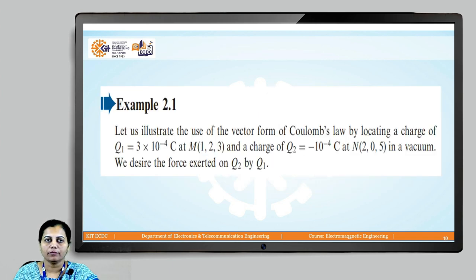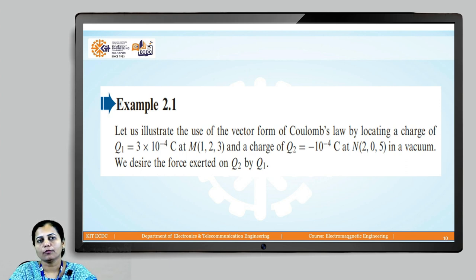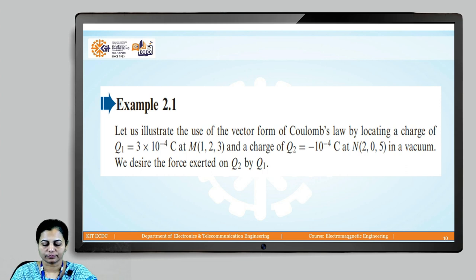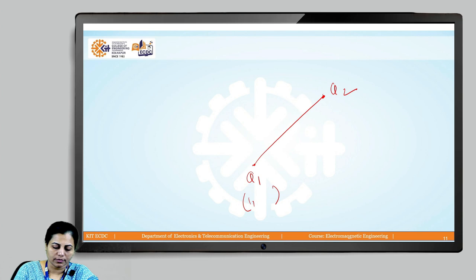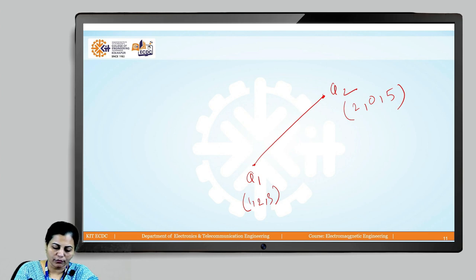We will solve one example to illustrate the vector form of Coulomb's law. We have charge Q1 = 3 × 10⁻⁴ Coulomb located at point (1, 2, 3) and charge Q2 located at point (2, 0, 5) in a vacuum. We want to find the force exerted on Q2 by Q1, so the direction is from Q1 towards Q2.